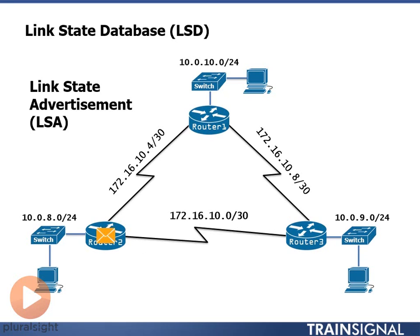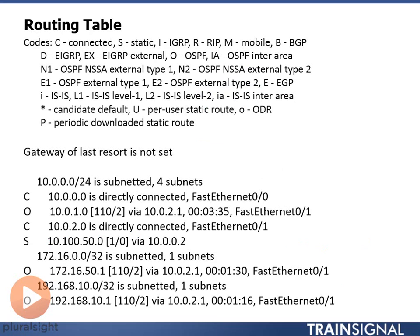Once the link state database is created through LSAs, we run the Shortest Path First algorithm — Dijkstra's algorithm — against it, and that builds the routing table. In our routing table we can see OSPF routes marked with an 'O' in front of them. Remember, OSPF has an administrative distance of 110. Once our routing table is built, we can begin routing packets. Let's take a look at the network diagram we're going to configure.